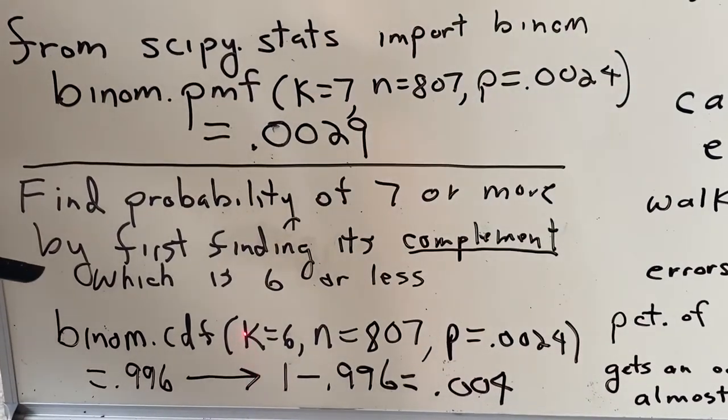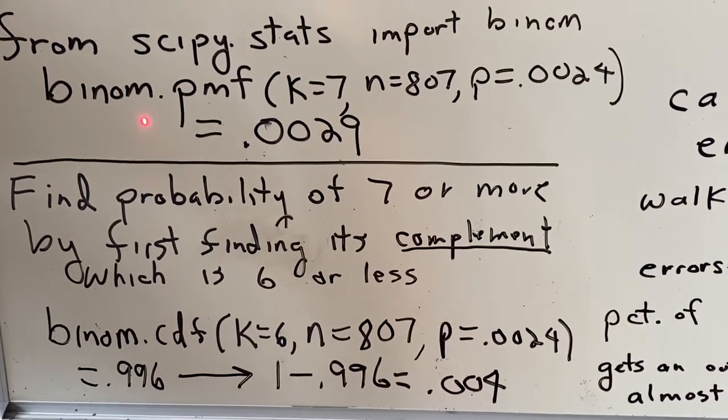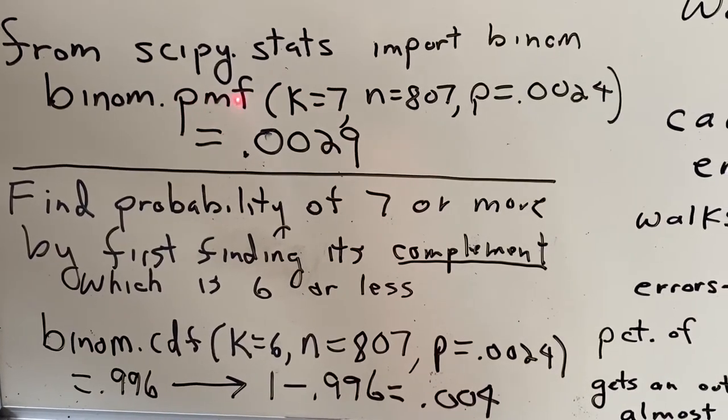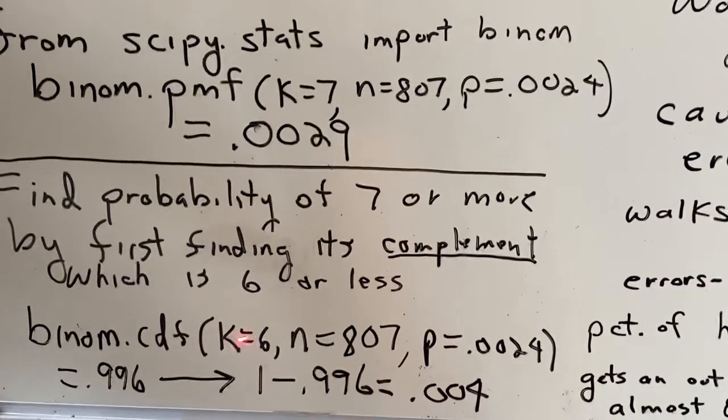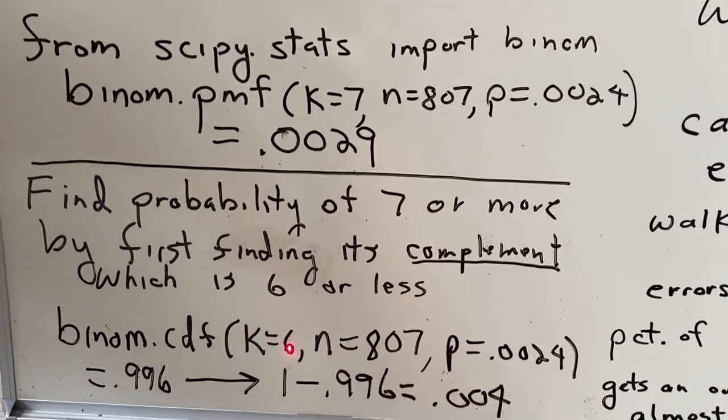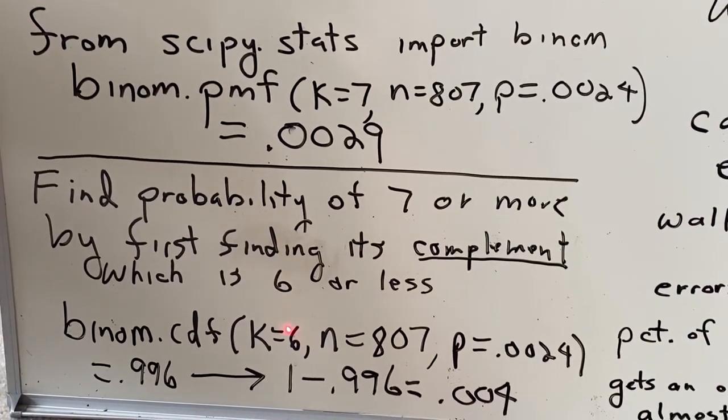So unlike the first example where we had exactly 7 with the PMF function, CDF finds the probability of that many or less. Because you're accumulating. So with this 6, you think of 0, 1, 2, 3, 4, 5, or 6. In other words, you're accumulating the probabilities from 0 through 6.